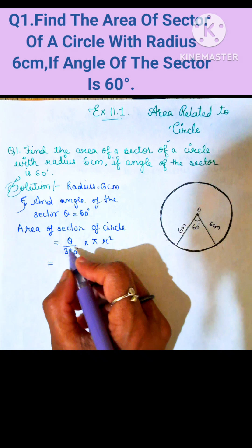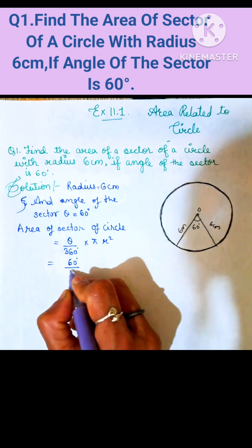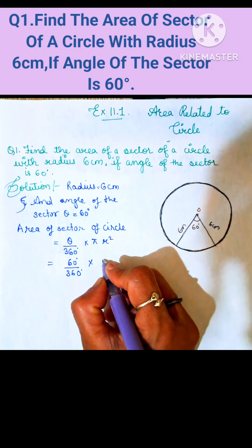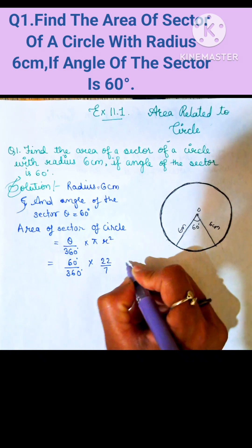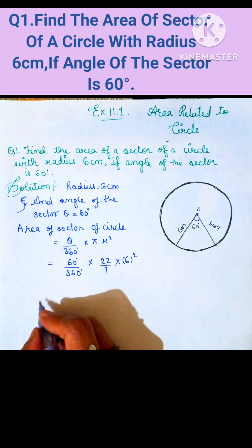Put the values here. Theta is 60 degrees divided by 360 degrees into pi. Pi's value is 22 divided by 7, and r is 6. So, 6 whole square here.